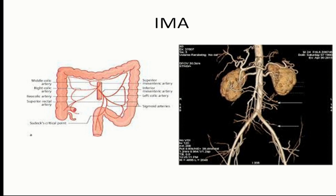This is the natural bypass — always keep in mind when giving a diagnosis. Whenever there is SMA occlusion, always check the IMA or celiac. Many times the celiac and SMA are occluded together, and in that case the IMA plays a vital role — the patient survives only because of the IMA. So the IMA has a very important role for the abdomen as well as the pelvis.